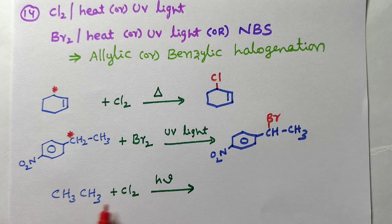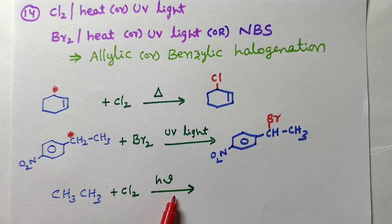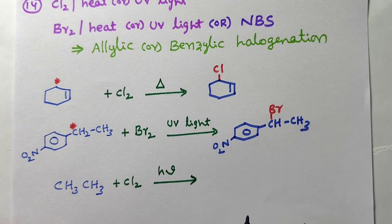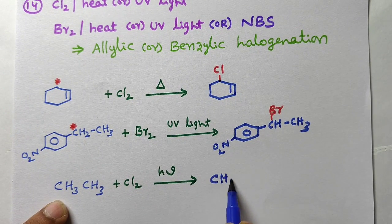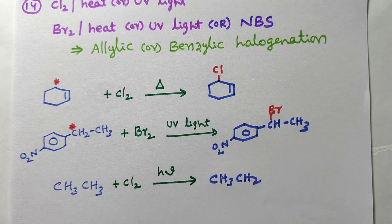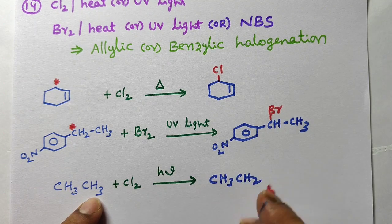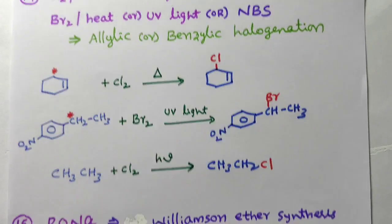Next: alkane reacts with chlorine in the presence of sunlight or high temperature to form alkyl halide. For example, CH3CH3 — hydrogen free radical is replaced by chlorine free radical to give the corresponding alkyl chloride.